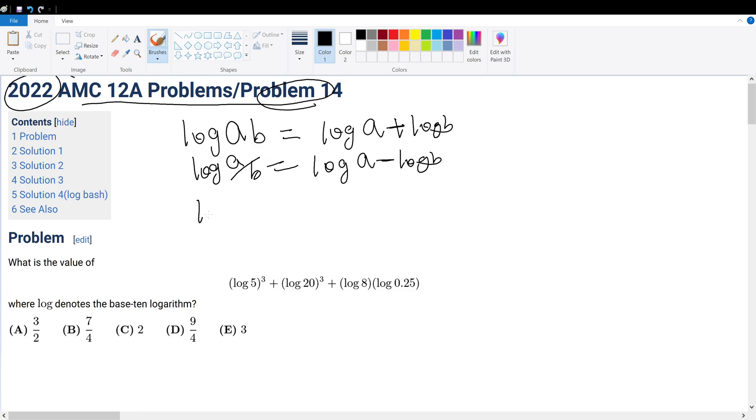And if we have an exponent, we could always move the exponent out in front. For example, log A to the negative X could be negative X log A. Now that we know these basic log rules, we can solve this question.